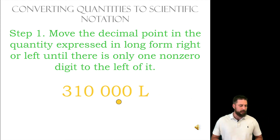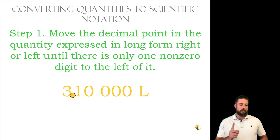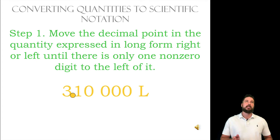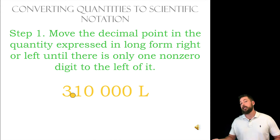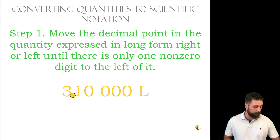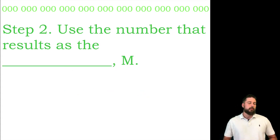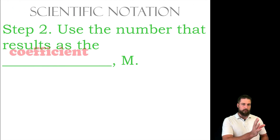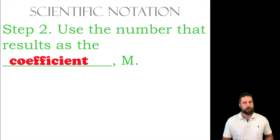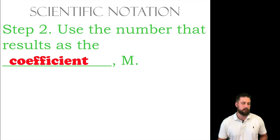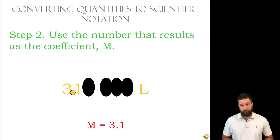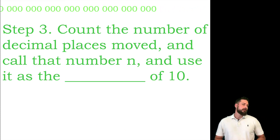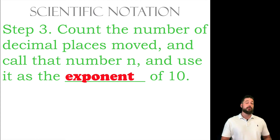So we move the decimal to where there's one non-zero digit to the left. If we had a number like .00031, we would move it to the right until there's one non-zero to the left. The next step is to use the resulting number as the coefficient — the part in front of the times ten. In this situation the coefficient is going to be 3.1. Then you count the number of times the decimal point moved, and that number becomes the exponent of the ten.